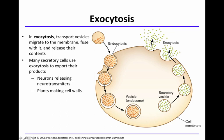Exocytosis means exiting — leaving the cell. In exocytosis, transport vesicles migrate and fuse with the membrane, and when they do that, they release their contents. This is exocytosis. Many secretory proteins exit a cell in this way.